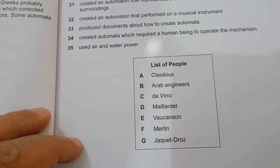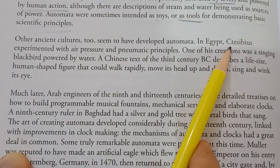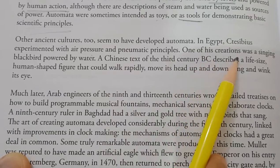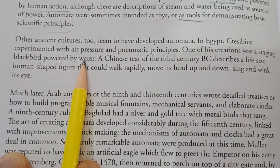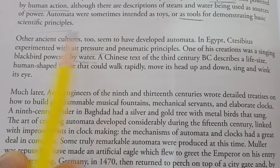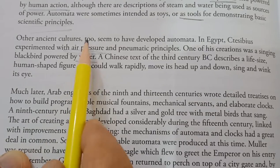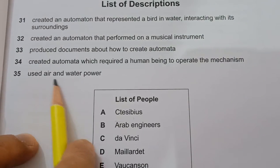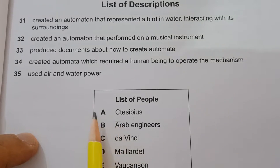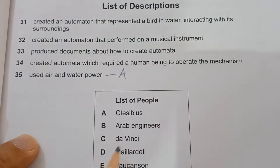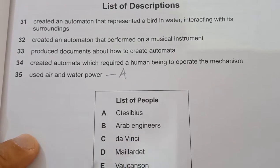The first person in the list is Ctesibius (A). In Egypt, Ctesibius experimented with air pressure and pneumatic principles. One of his creations was a singing blackbird powered by water. So the two keywords are air pressure and water power. Looking at Statement 35: 'Used air and water power.' That matches Ctesibius, so the answer to Question 35 is A.